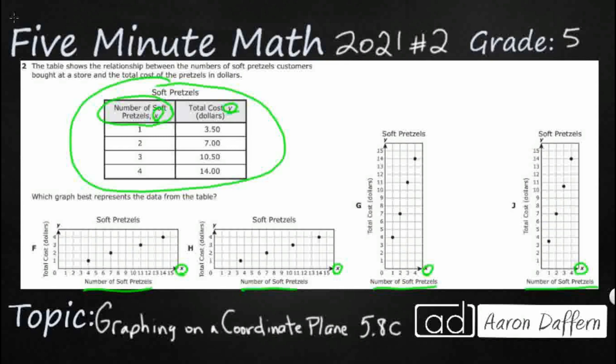So that x axis is always going to be the number of soft pretzels, and then our y axis is going to be the total cost in dollars. And that is true all the way across, which means they most likely ended up reversing some of the values, because some of these numbers are way too big for the number of soft pretzels. Look at my number of soft pretzels. They only go up to 4, yet some of these have them up to 14, which means they reversed some of these values.